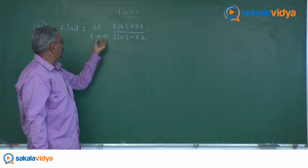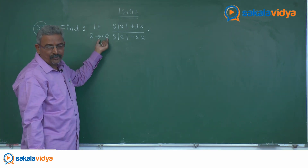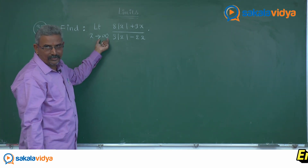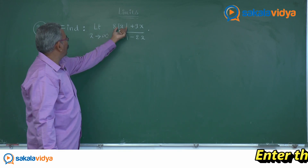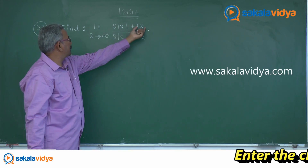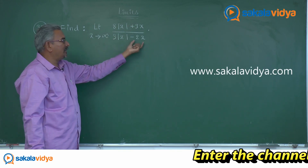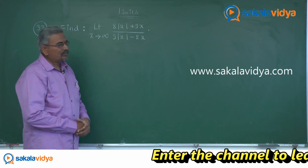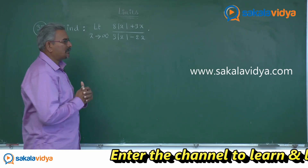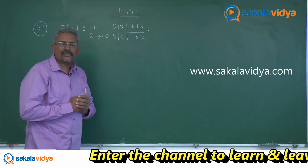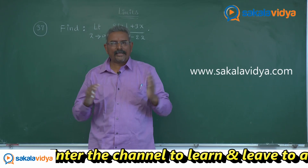Let's solve one more problem. The limit as x tends to positive infinity of (8|x| + 3x) divided by (3|x| − 2x). To solve this problem, we need to write the value of mod x.